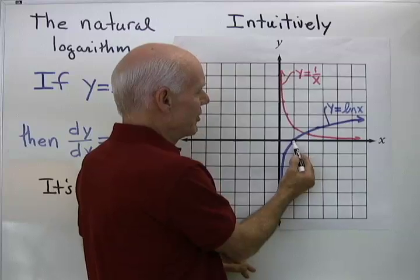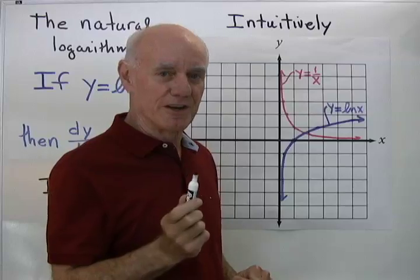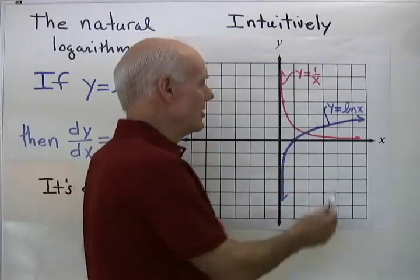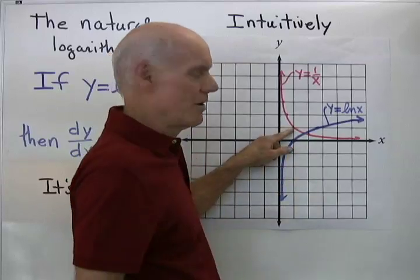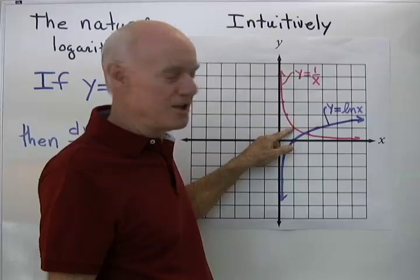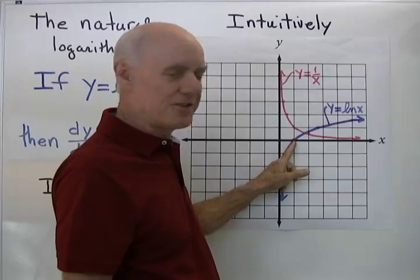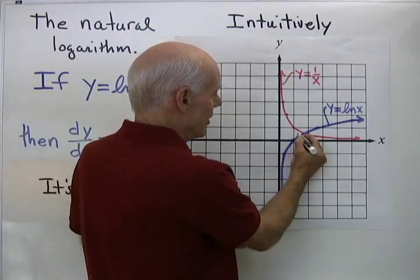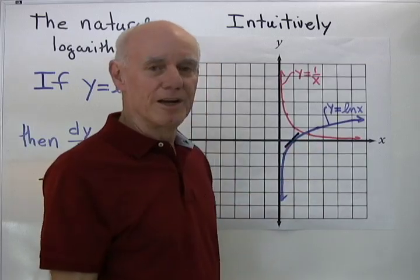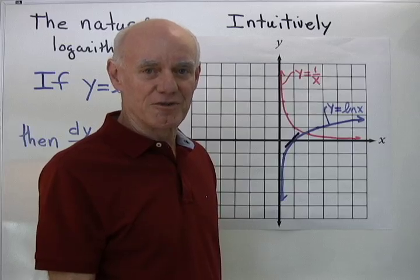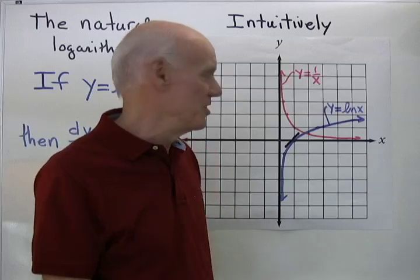When I go to this point on the natural logarithm function at x = 1 and want to find its derivative, I go up to the red graph and read the y-coordinate, which is 1. That tells me the slope of the tangent line to the blue graph at that point is 1. I'll draw in a tangent line — does that look tangent to the graph? Yes, it does, it looks reasonable.